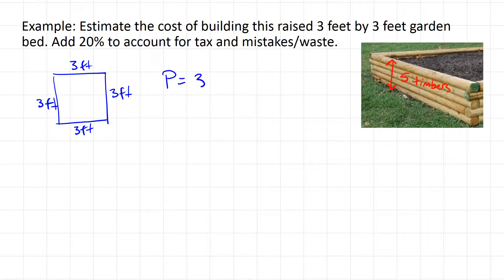So the perimeter is 4 sides, 3 feet each, for a total of 12 feet.